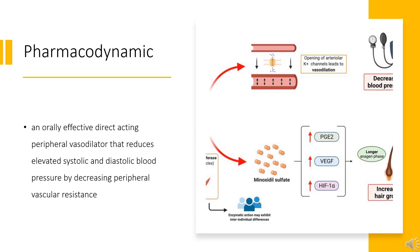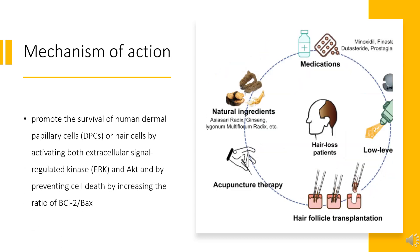The antihypertensive activity of minoxidil is due to its sulfate metabolite, minoxidil sulfate. Minoxidil is thought to promote the survival of human dermal papillary cells (DPCs), or hair cells, by activating both extracellular signal-regulated kinase (ERK) and Akt, and by preventing cell death by increasing the ratio of BCL-2/Bax.